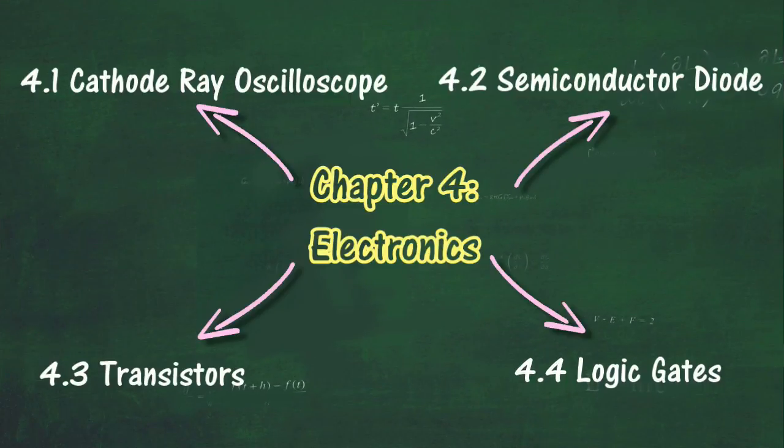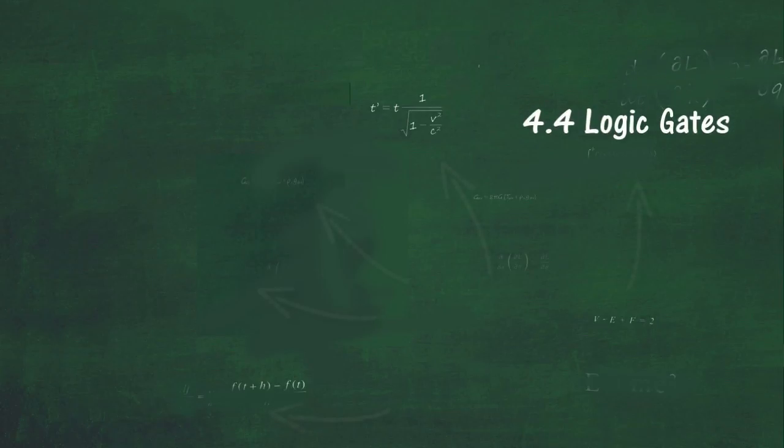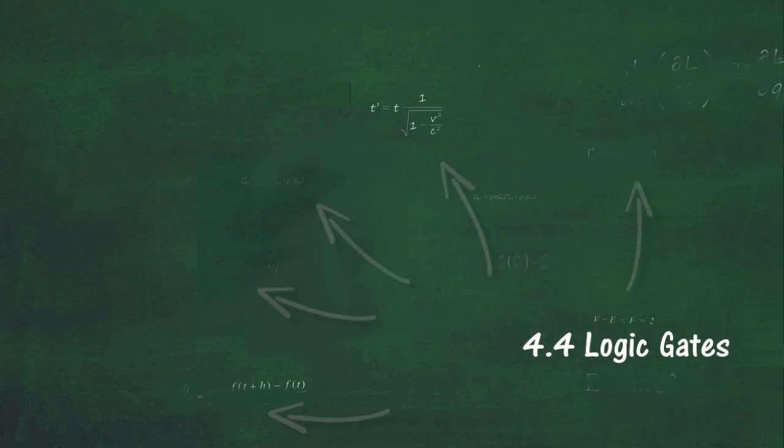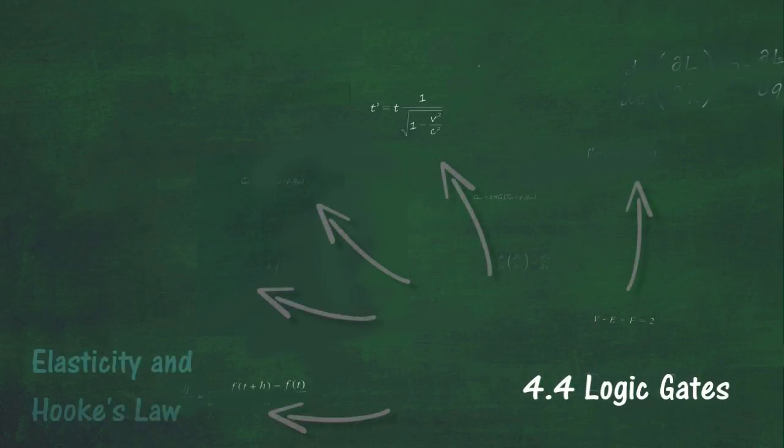At the end of this chapter, section 4.4, we will learn about logic gates. At the end of this section, you should be able to state that logic gates are switching circuits in computers and other electronic systems.